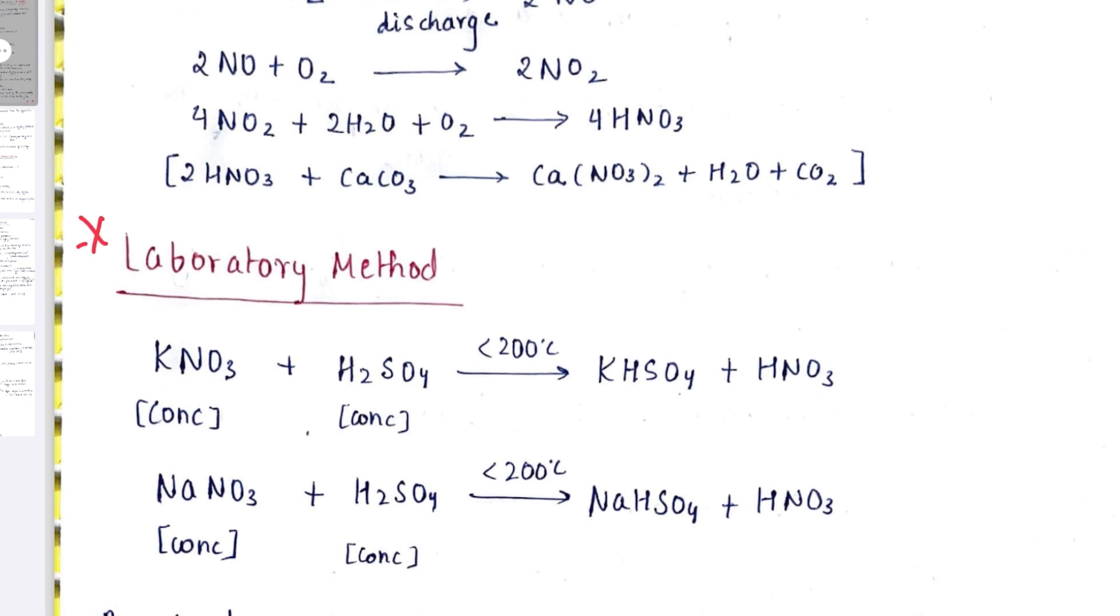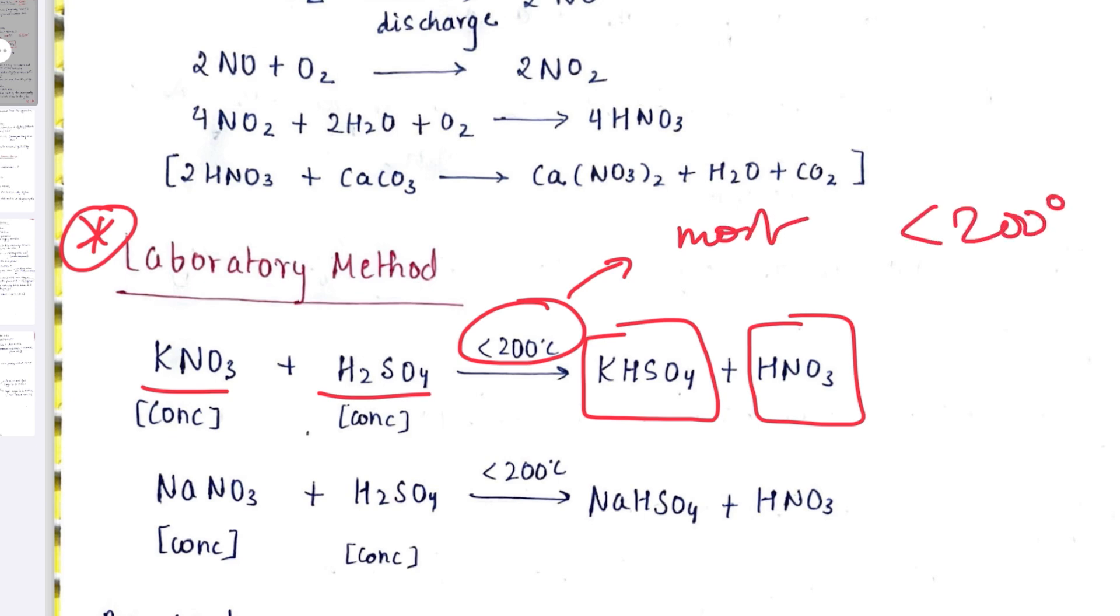Most important questions in this particular chapter are the laboratory method. They'll ask you how is HNO3 formed or mention the lab reaction. So it is KNO3 plus H2SO4 which gives you KHSO4 plus HNO3 and the temperature is the most important point here: less than 200 degrees Celsius will only give you HNO3. If you don't mention this then a straight zero will be given to you.